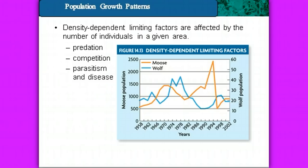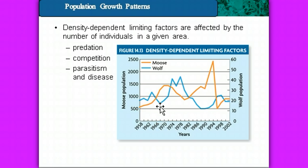Looking at this graph, we can see the correlation between moose and wolf populations. Moose are one of the prey of wolves, and we studied a population completely isolated on Isle Royale in Lake Superior, just off the tip of Minnesota. We can see that the wolf population takes a couple of dramatic dips over time — before 1970, and then again hitting a real low at the end of the 1980s into the 1990s.